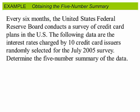Let's look at an example. Every six months the United States Federal Reserve Board conducts a survey of credit card plans in the U.S. The following data are the interest rates charged by ten credit card issuers randomly selected for the July 2005 survey. Determine the five-number summary of the data.